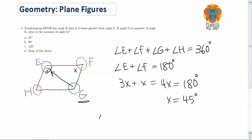So that means that angle F is 45 degrees, but remember this problem is asking for the angle measure of G. G is opposite E, which means that angle G is 3x.